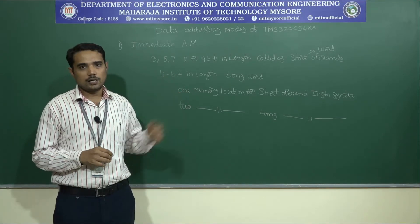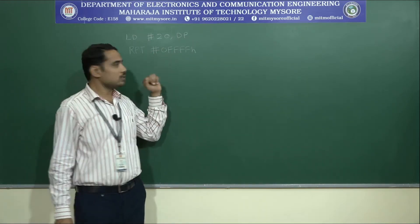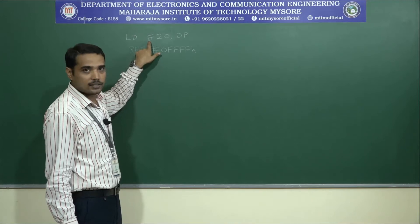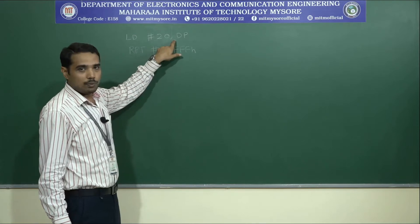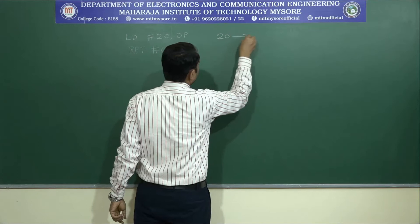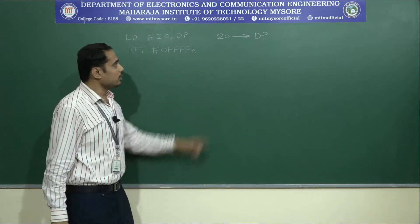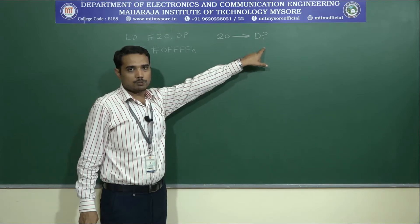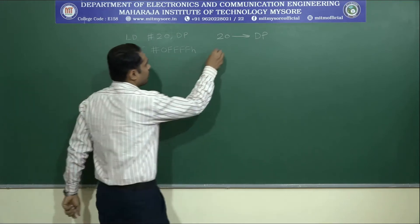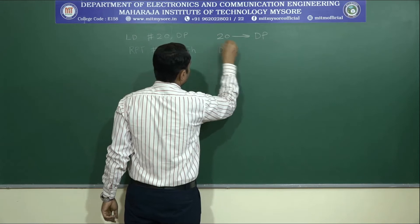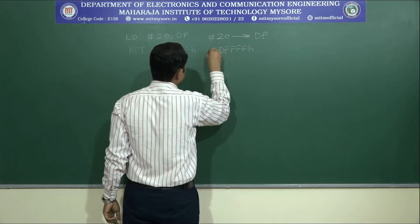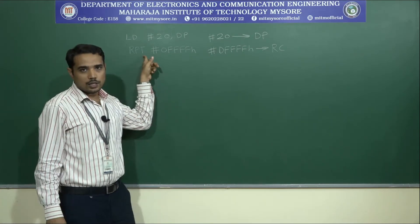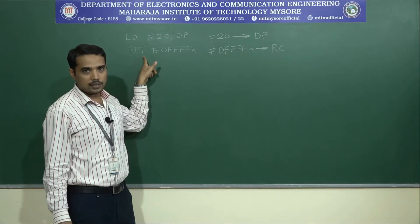Now let us see some examples for the immediate addressing mode. In the first instruction, the immediate value is indicated by the hash (#) symbol. Here, #20 comma DP means an immediate value 20 will be moved to the data pointer — the memory location is fixed with respect to value 20. In the second case, the value 0FFH is part of register RC. RPT refers to the repeat instruction, repeating a certain instruction a certain number of times.